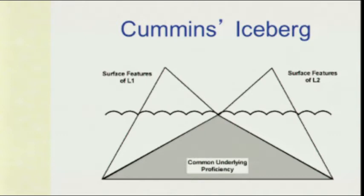Everything below the surface enhances what's above the surface too. What's below the surface in language acquisition we call common underlying proficiency. It is your academic knowledge, it is your history in schools, it's all that you've learned. In U.S. schools we want kids to move into English above the surface really quickly. But the way they will get English more rapidly and more effectively is because of the rich academic experience below the surface — all of that goes with them to the next language, just like when you took a foreign language.